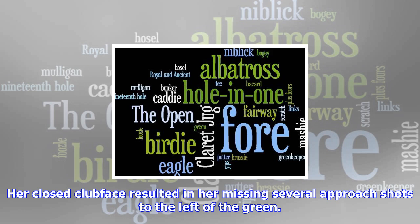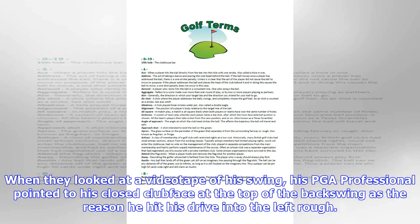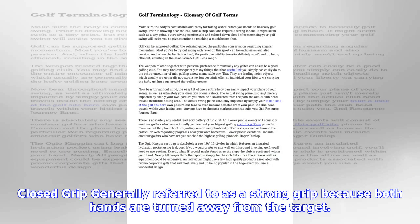Chicken wing: a swing flaw in which the lead elbow bends at an angle pointed away from the body, usually resulting in a blocked or pushed shot. Once Jack's PGA professional saw him, he knew the cause of Jack's loss of power was his chicken wing position at impact.